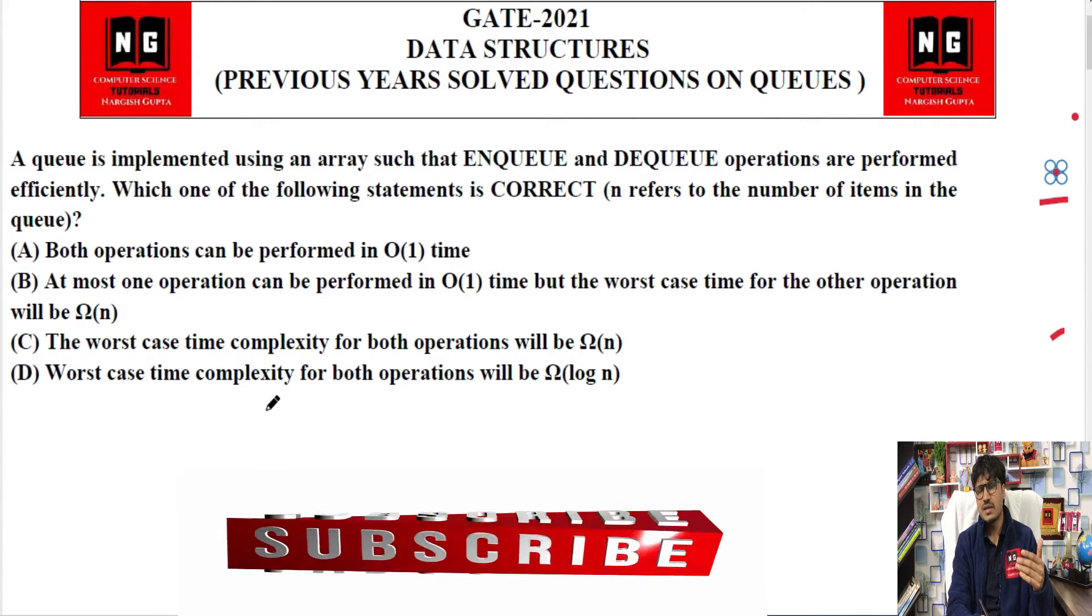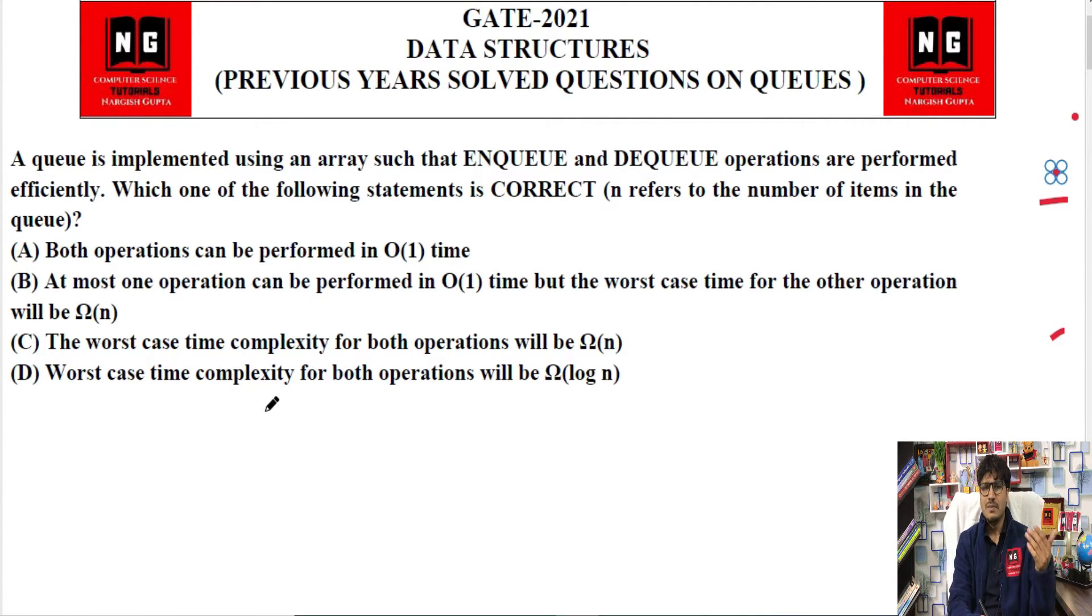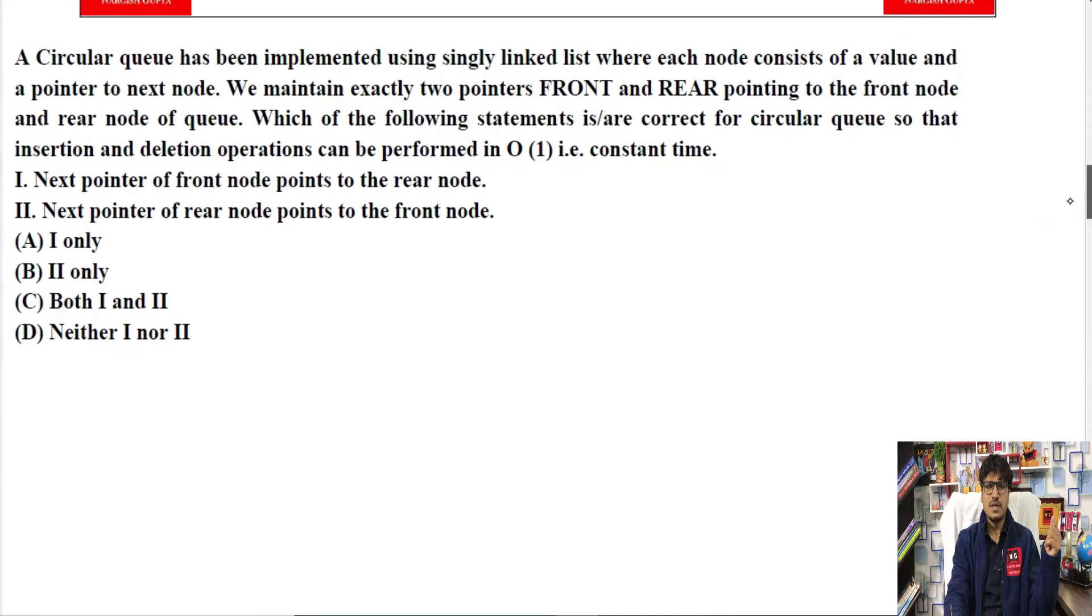But kyunki here he's not saying that we're talking about N elements or 10 elements, he's just saying that efficiently we will perform enqueue and dequeue operations in the queue. So the time taken to enqueue and dequeue in a queue is constant time, which is order of one. So both operations can be performed in order of one constant time.